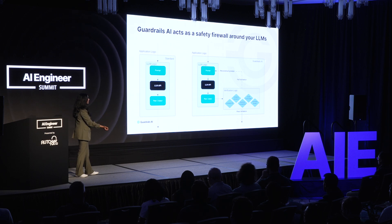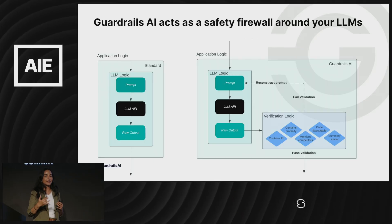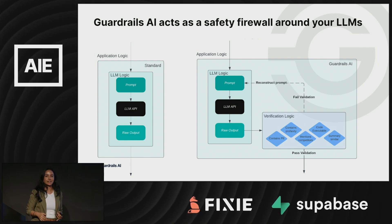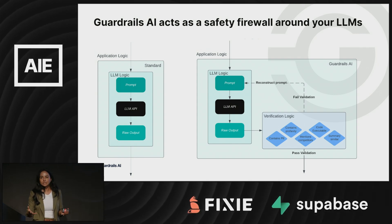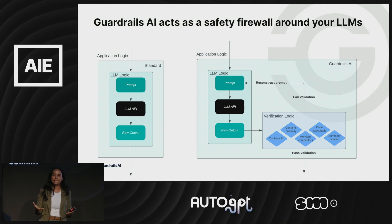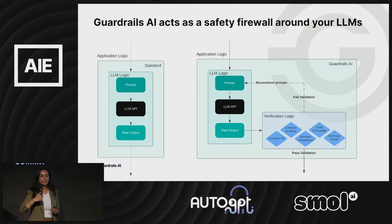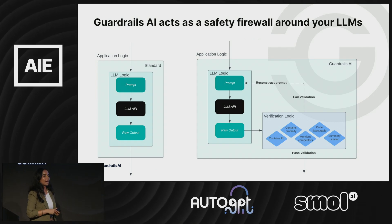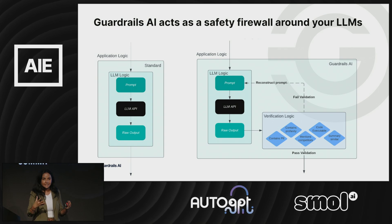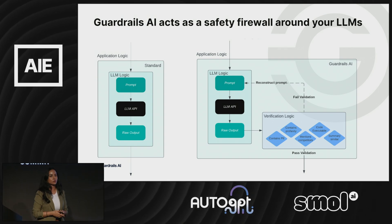The paradigm we propose is: only use large language model outputs if your verification suite passes. On failure, you can hook into the very powerful capability that LLMs unleash — their ability to self-heal. If you tell them why they're wrong, they can often correct themselves. You can go through this loop again if you have the latency budget, dollar budget, or token budget to implement this.